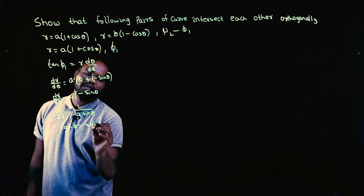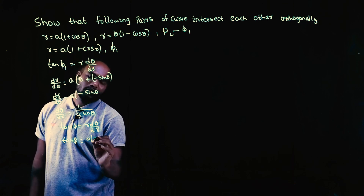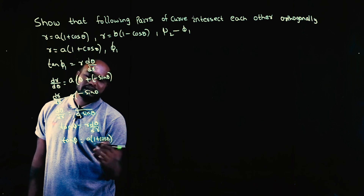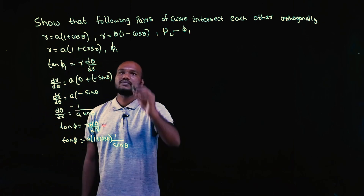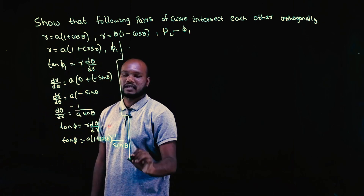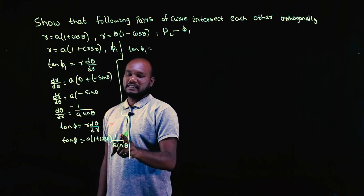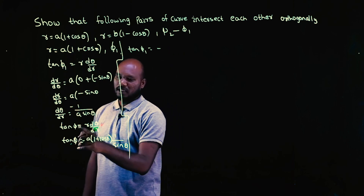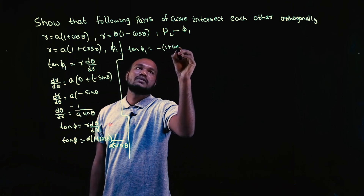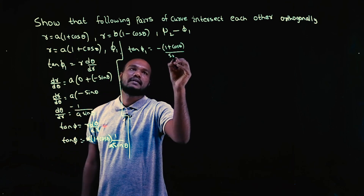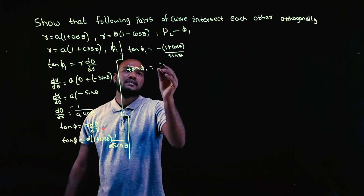Now using tan φ₁ = r · (dθ/dr): r = a(1 + cosθ) and dθ/dr = -1/(a·sinθ). Substituting: tan φ₁ = a(1 + cosθ) · (-1/(a·sinθ)). The 'a' cancels, giving tan φ₁ = -(1 + cosθ)/sinθ.